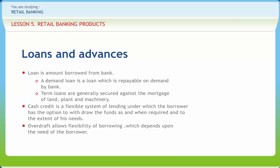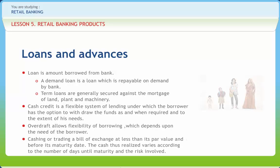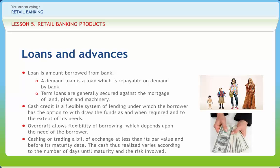Apart from sanctioning loans and advances, discounting of bills of exchange by the bank is another way of making funds available to customers. Bills of exchange are negotiable instruments which enable debtors to discharge their obligations to creditors. Such bills of exchange arise out of commercial transactions, both inland trade and foreign trade. Discounting involves cashing a bill of exchange at less than its par value and before its maturity date; the cash thus realized varies according to the number of days until maturity and the risk involved.